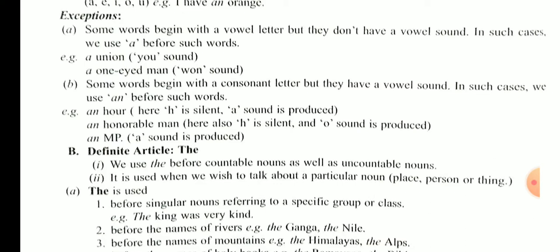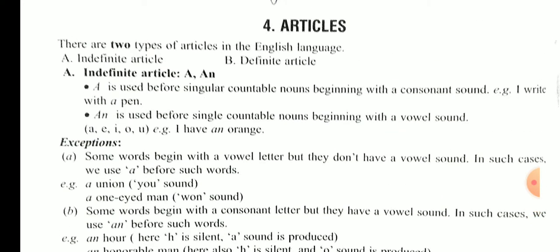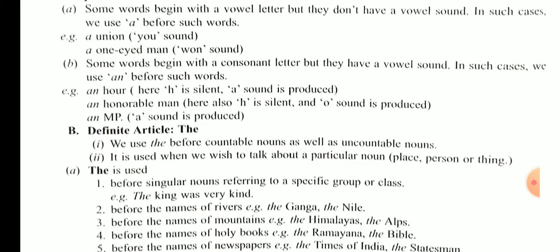MP use किया हमने, लेकिन जब हम उसको pronounce करते हैं तो 'एम' का sound आ रहा है, तो हमने 'an' लगाया इसके साथ भी। तो यह थे हमारे 'a' और 'an' को use करने का तरीका। दूसरा भी जो group है हमारा - type 2 जो है हमारा है definite article।